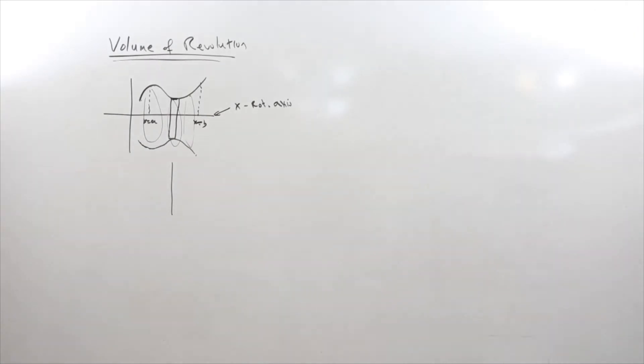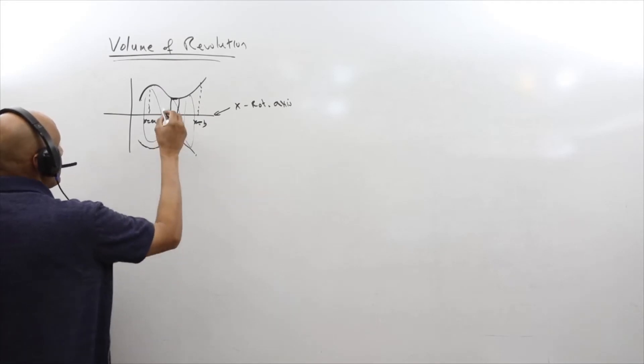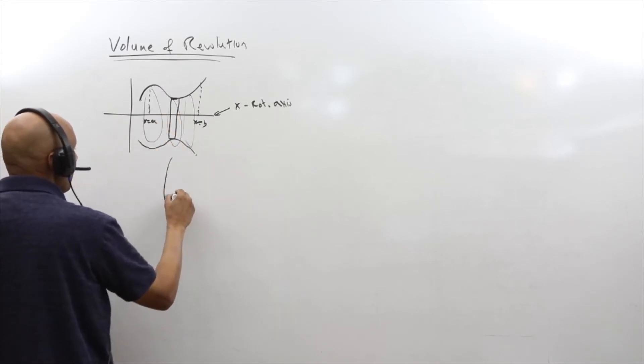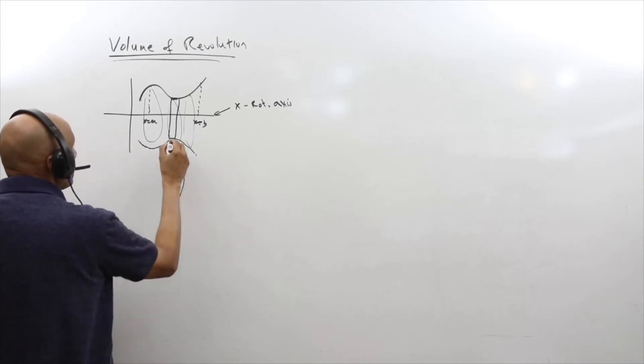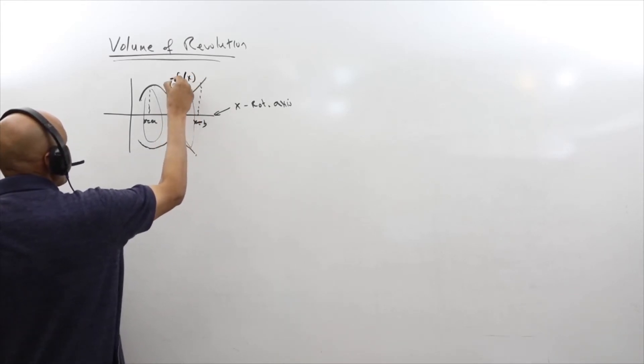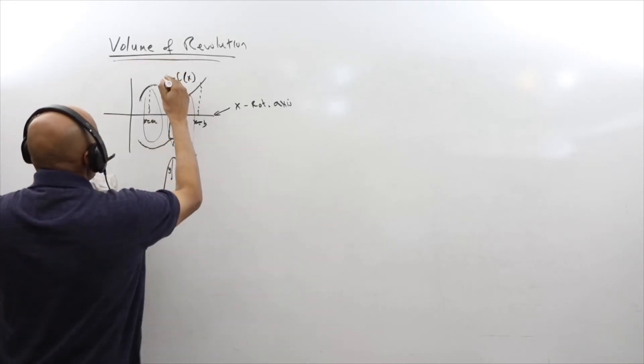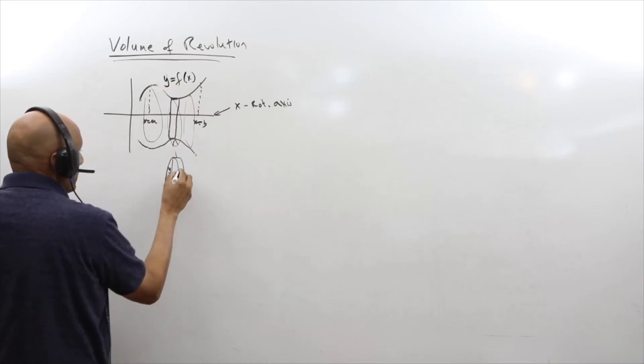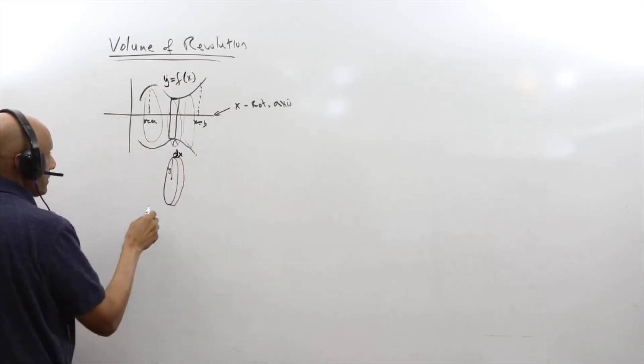Each disk is basically like this. So this is the disk that's over here. I know that the radius of the disk happens to be y from here to here, assuming this function is f(x) equals y, or y equals f(x). And the thickness of this disk is dx.